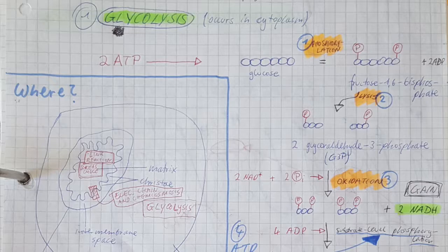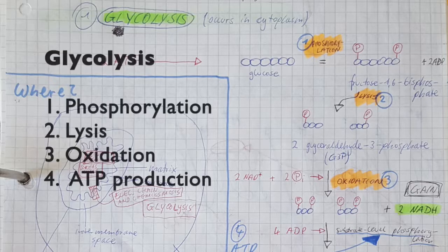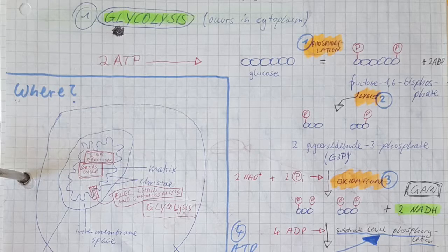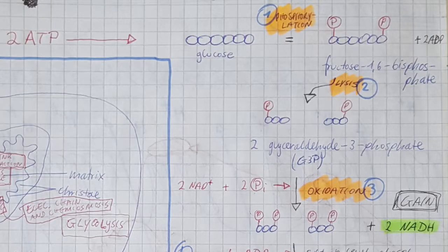Glycolysis has four main steps: phosphorylation, lysis, oxidation, and ATP formation. As you can see on the picture here, we're going to start with a molecule of glucose and we have to put in some energy. We actually need to put in two ATP in order to phosphorylate this molecule. We're going to take a phosphate group from each ATP and add them to the glucose molecule.